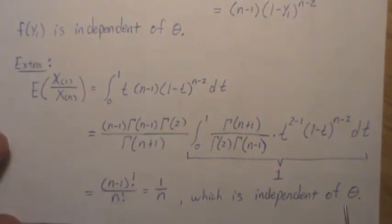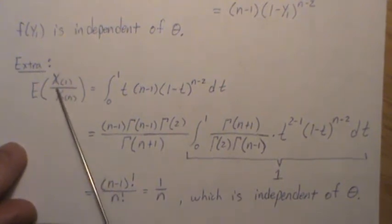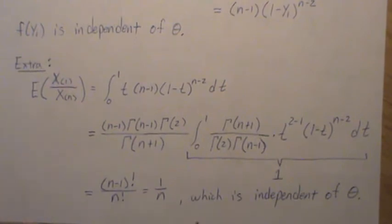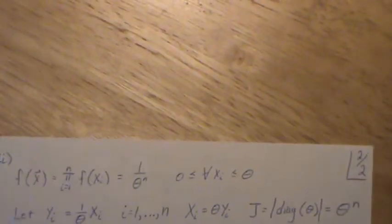Notice it's independent of theta. Well, and it better be, because the distribution of this is ancillary, which is independent of theta. So that mean better be independent of theta. But we're going to revisit this example when we talk about Basu's theorem.